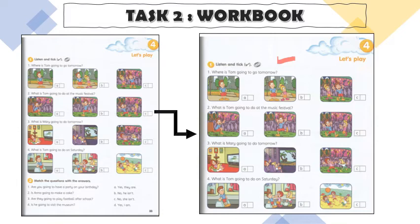Number three: 'What is Mary going to do tomorrow? Mary, are you going to come to the music festival?' 'No, I can't — my cousin is going to visit me tomorrow.' 'What are you guys going to do?' 'We're going to watch a film at home.' 'No, we're going to go to the cinema.' Done. Number four: 'What is Tom going to do on Saturday? Is your cousin going to stay for the whole weekend?' 'Yes, she is. Let's all do something together on Saturday.' 'Let's all go to the shopping center.' 'Why don't we go to the beach? My cousin loves swimming.' 'Let's go to the beach!'